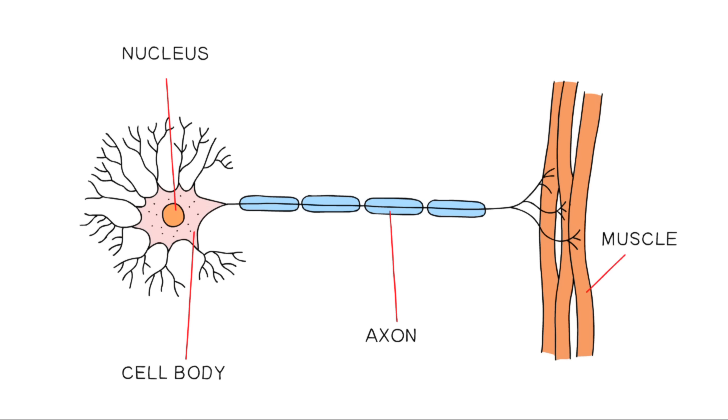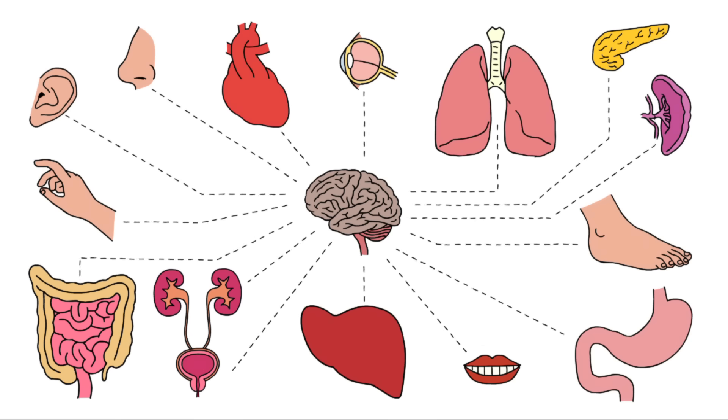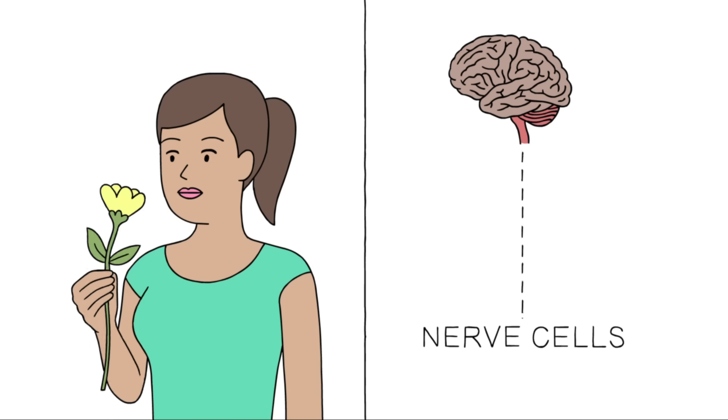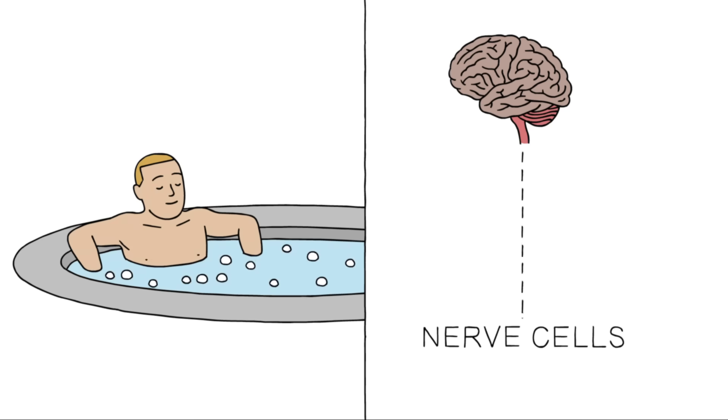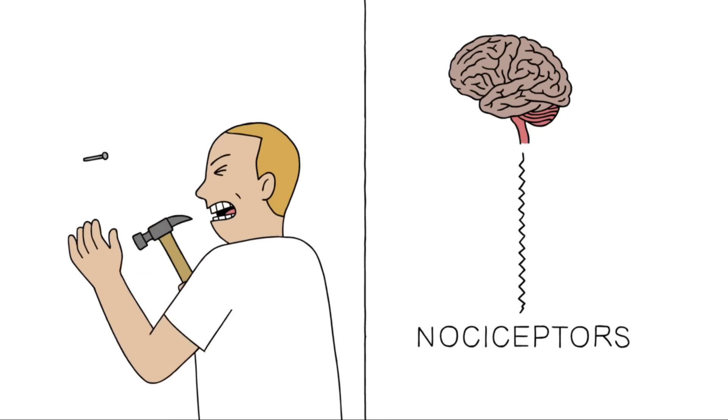Just like all nerve cells, they conduct electrical signals, sending information from wherever they're located back to your brain. But, unlike other nerve cells, nociceptors only fire if something happens that could cause or is causing damage.